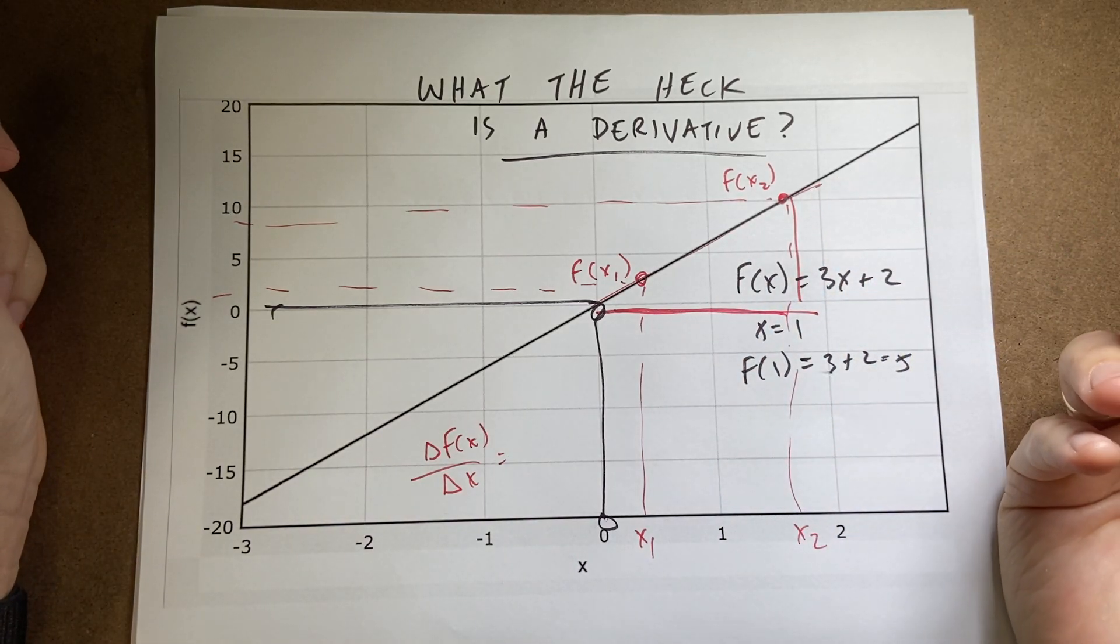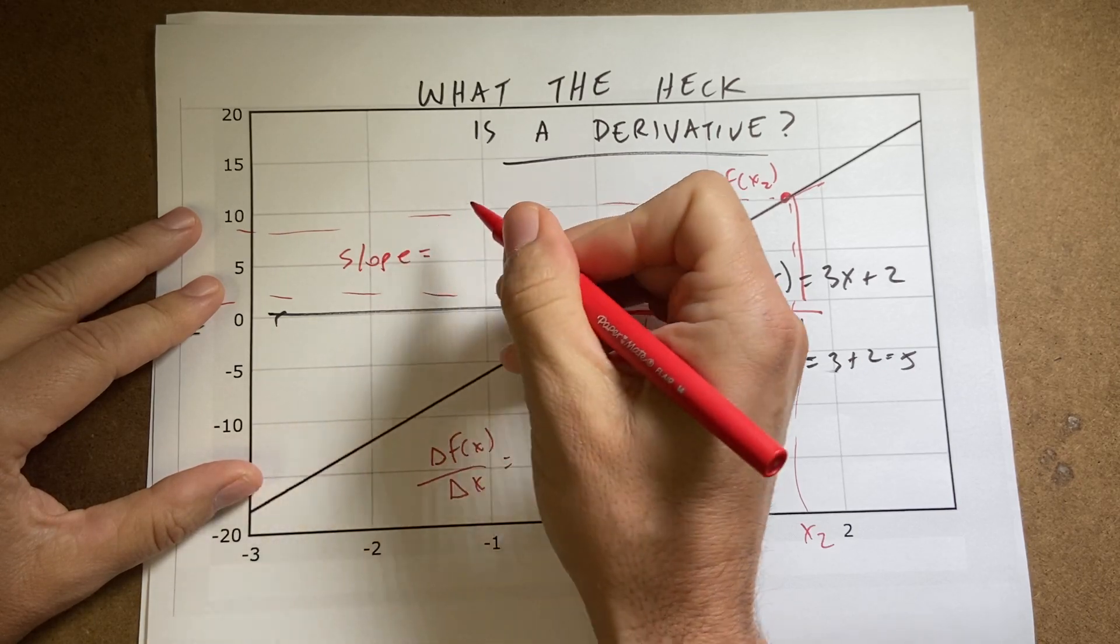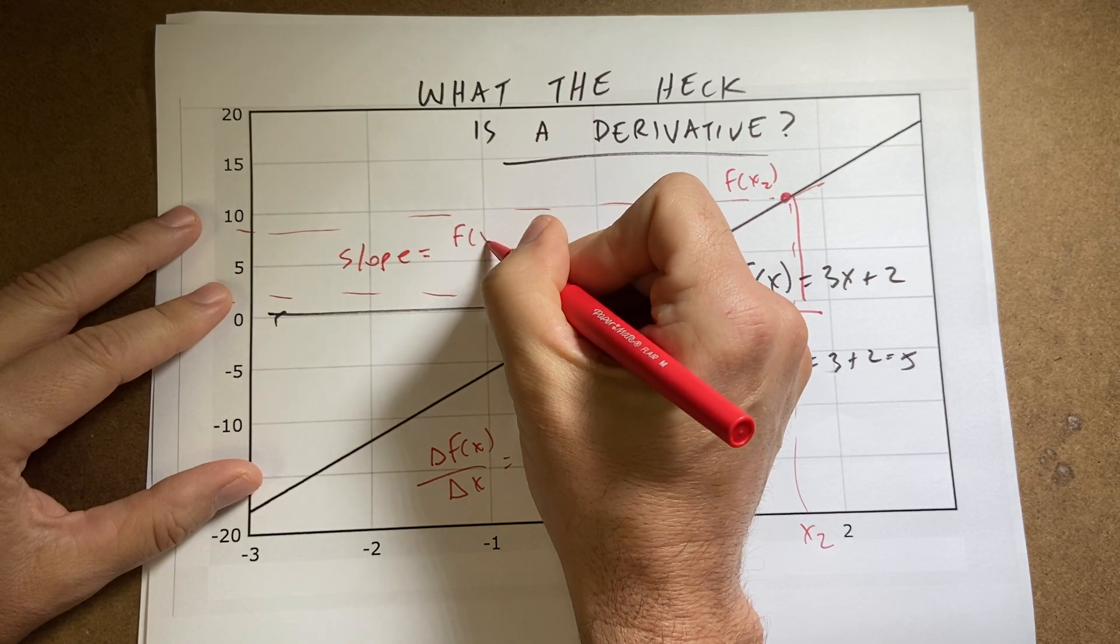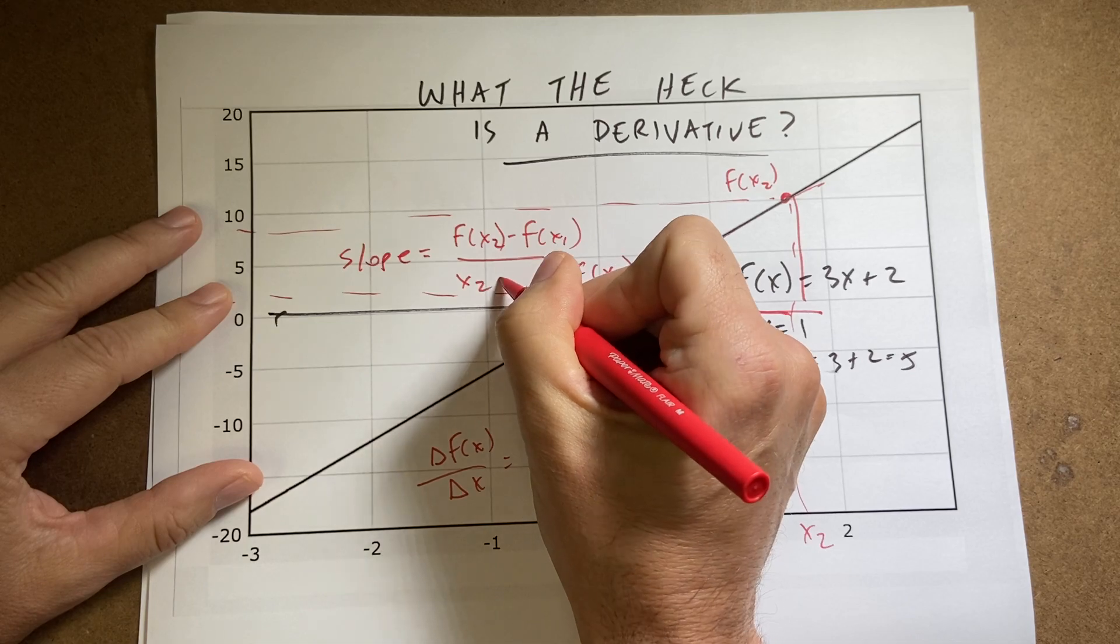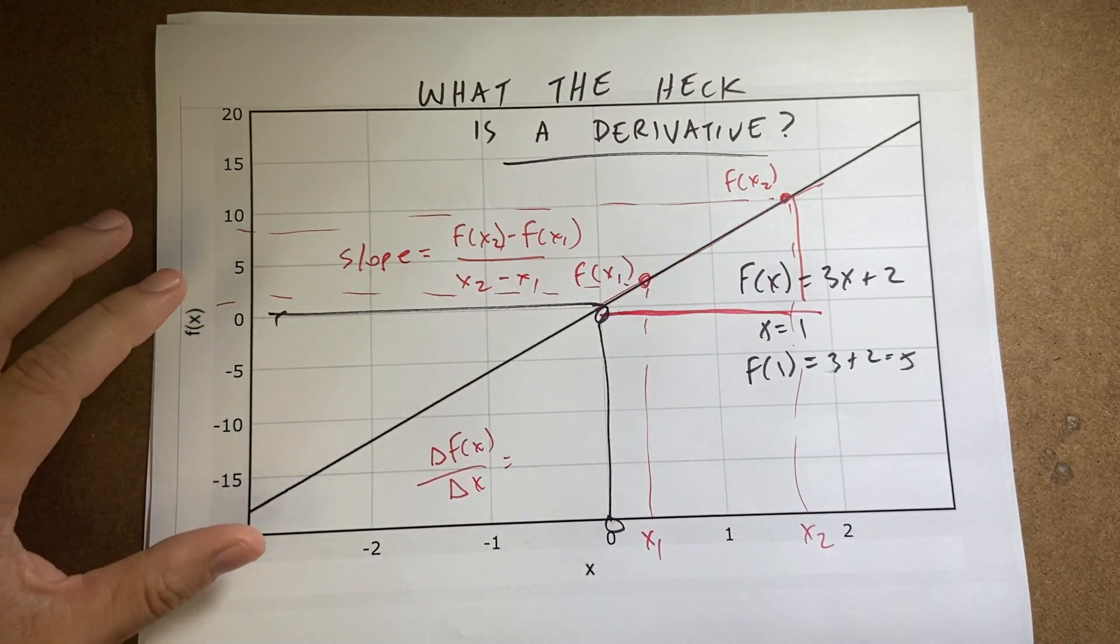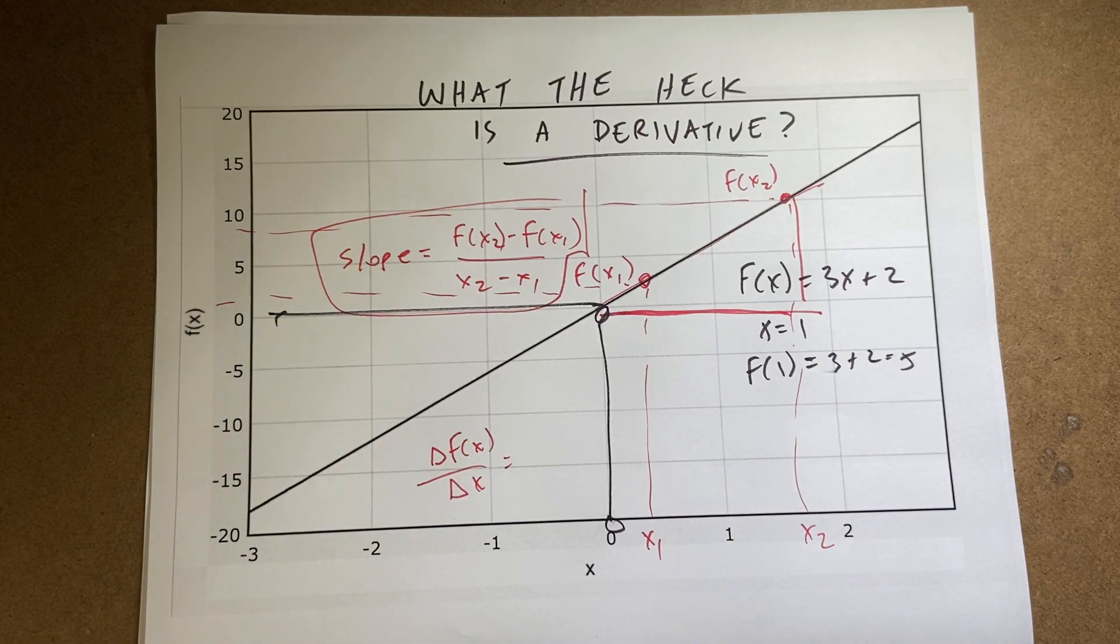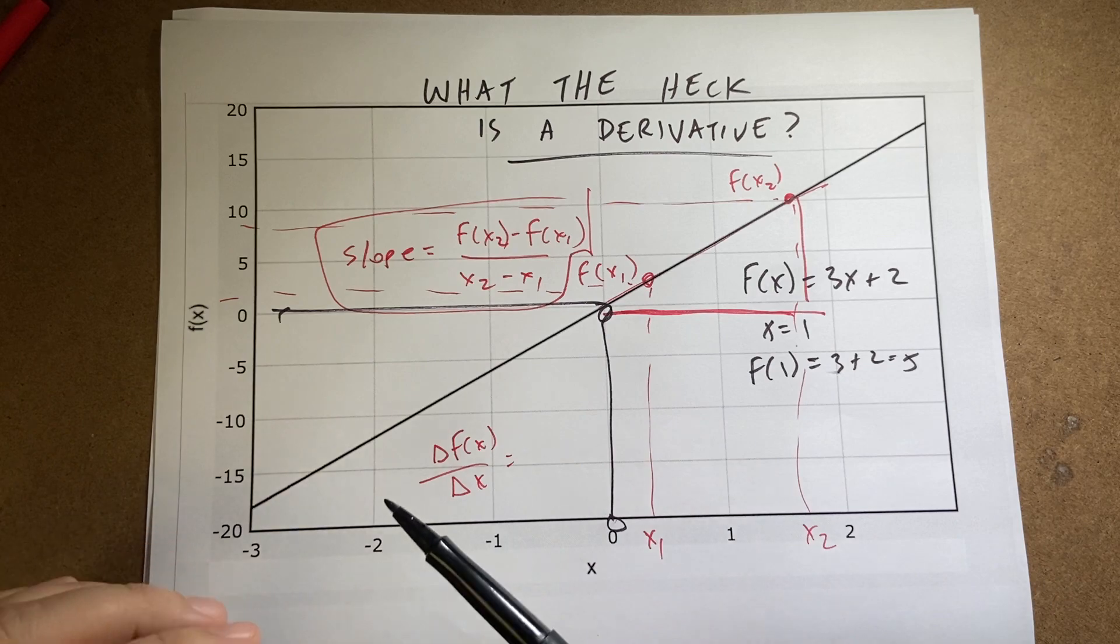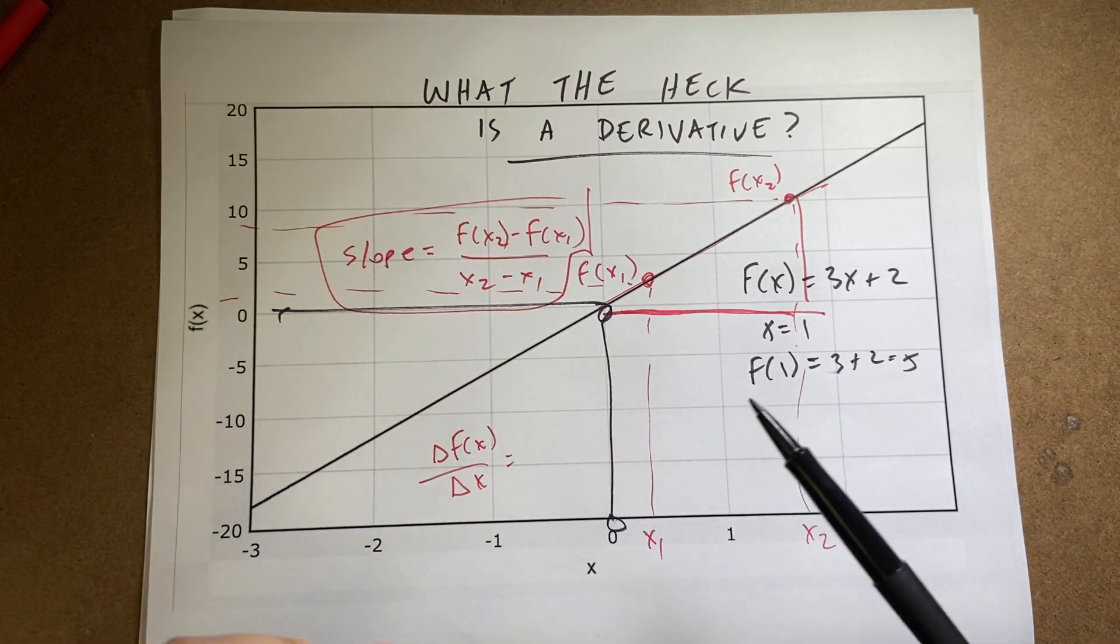What does that actually tell us? So let's write that out. Slope is going to be the change in the vertical which is going to be f of x2 minus f of x1 over x2 minus x1. That's the slope. This tells us, in physics we like to think about this, tells us how fast the function changes with x. So it's kind of an important thing.